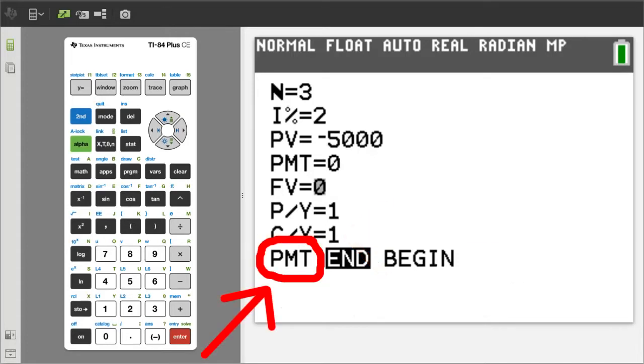The next variable is PMT. PMT is when do we receive our interest payment, at the beginning of each period or at the end of each period. We are only going to get our interest at the end of each period. So leave this at end. This is already highlighted as the default. Now we are ready to calculate the answer.